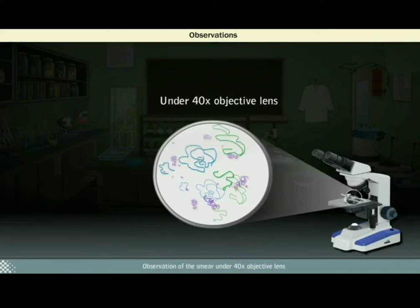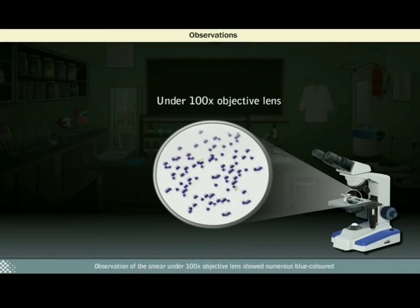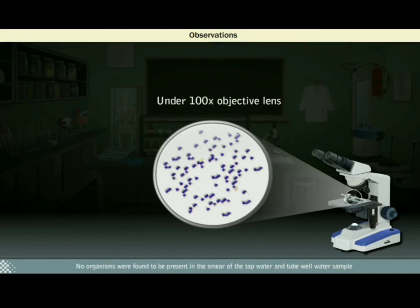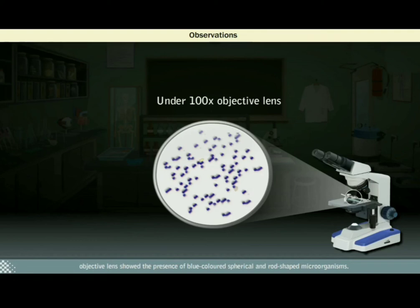Observation of the smear under 40x objective lens showed blue-colored organisms with varied structures. Observation under 100x objective lens showed numerous blue-colored spherical, rod-shaped, comma-shaped, and helically coiled microorganisms. Similar organisms were observed in the smears of lake and river water samples. No organisms were found in the smear of the tap water and tube well water sample under 10x and 40x objective lenses, but observation under 100x objective lens showed the presence of blue-colored spherical and rod-shaped microorganisms.